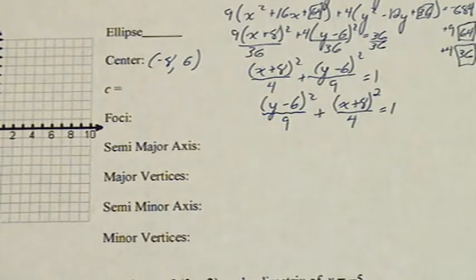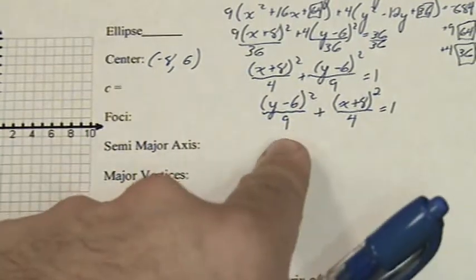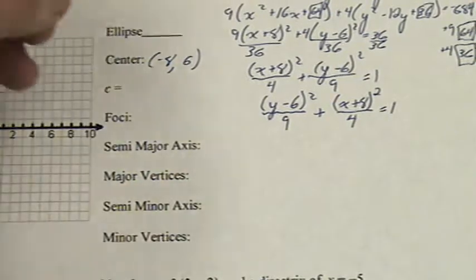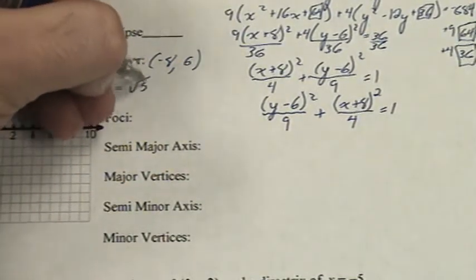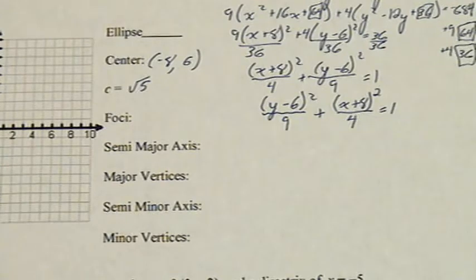For c, remember where the ellipse is, it's a squared minus b squared. 9 minus 4 is 5, c is the square root of 5.